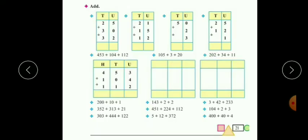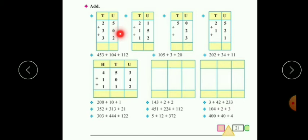Now let's solve some more examples from your maths textbook, page number twenty one. The first question: add twenty five plus thirty plus thirty two. As per our method, we always start addition from the units place. First we add five plus zero plus two: five plus zero is five, and five plus two is seven. Then in the tens place: two plus three is five, and five plus three is eight. So our answer is eighty seven.